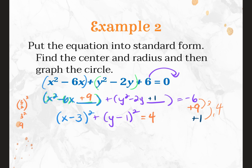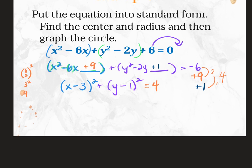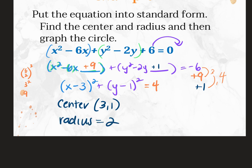Now the equation is in standard form, and from here you identify the center and the radius. If asked to graph it, you go to the center first — say, right 3 and up 1 — plot that point. Then go up, right, down, and left by the radius to get the graph of your circle.